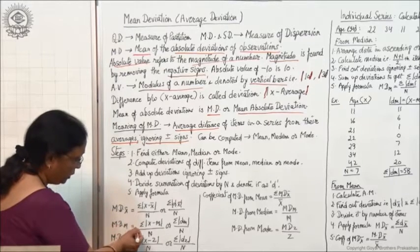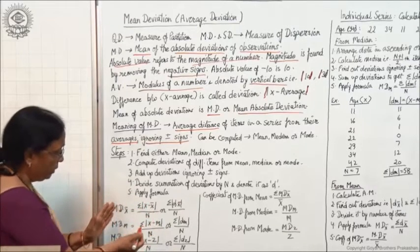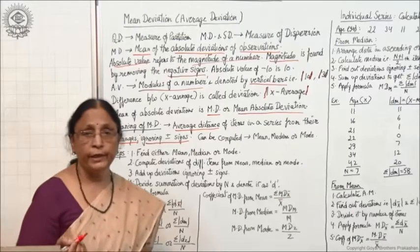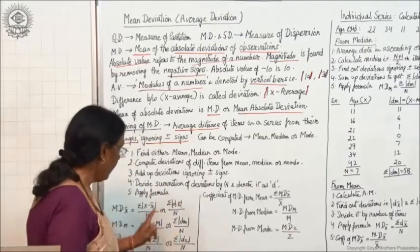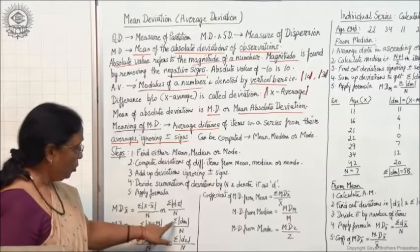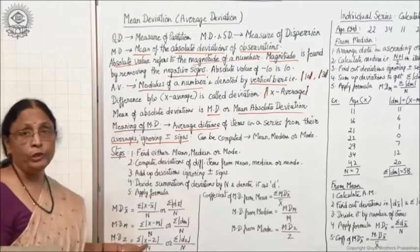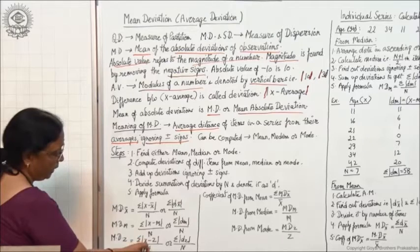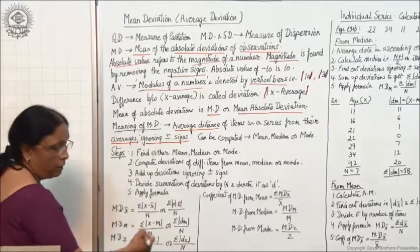Mean deviation from median is MDm = sigma |x − M| upon n, or sigma |dm| upon n. Note that modulus signs are always present, indicating we ignore minus signs. Mean deviation from mode is MDz = sigma |x − Z| upon n, or sigma |dz| upon n, where Z denotes mode.